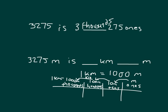Using digits 3, 2, 7, 5 in the place value chart, the three is worth three thousand, or three kilometers. The number of ones is not just five — I still have two hundreds and seven tens as well, or 275 ones. So that is three kilometers and 275 meters.